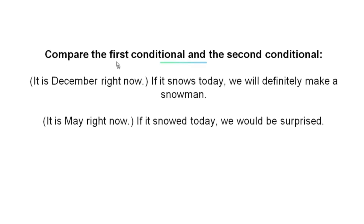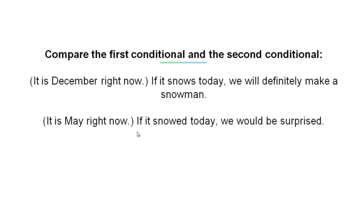Now, compare the first conditional and the second conditional. Have a look at the examples. 'If it snows today, we will definitely make a snowman.' This is in the first conditional because it is December right now and it's highly likely to snow. 'If it snowed today, we would be surprised.' This is in the second conditional because it is May right now and it's almost impossible for it to snow.